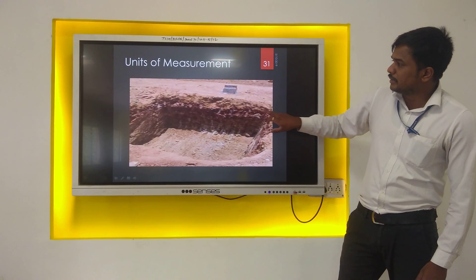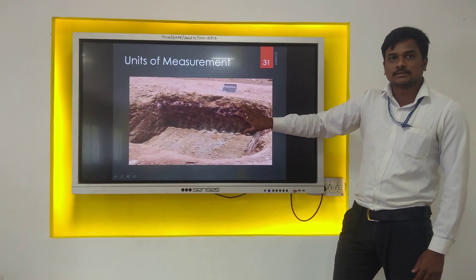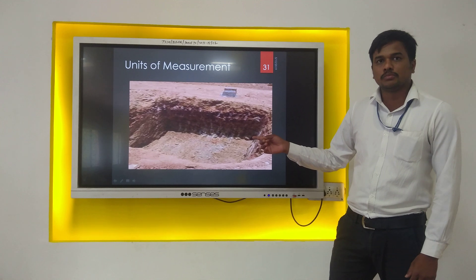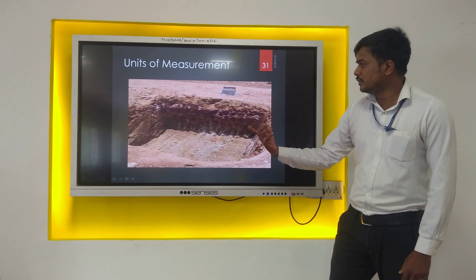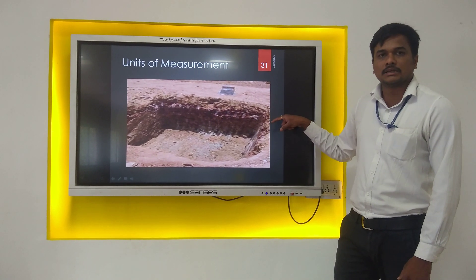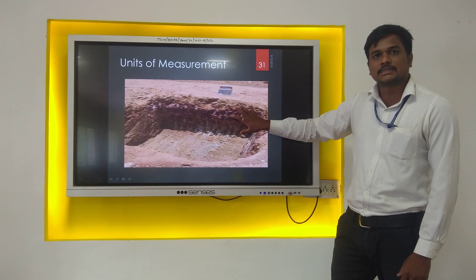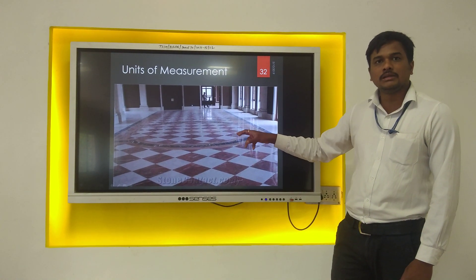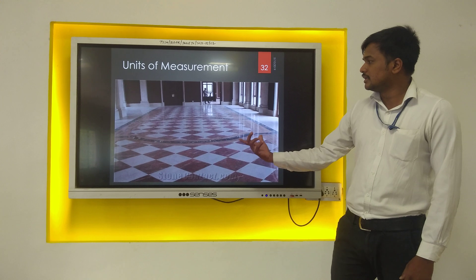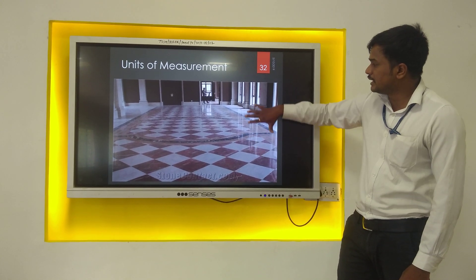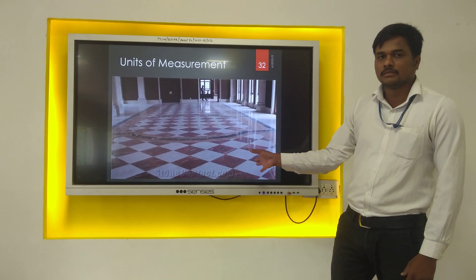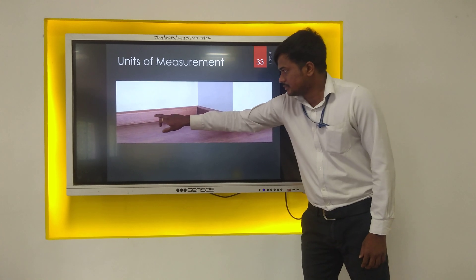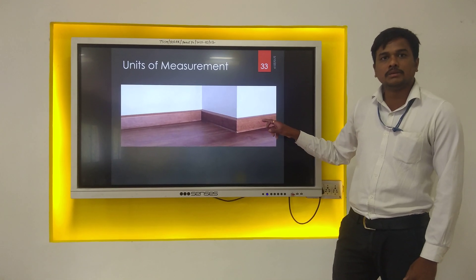Let us see some examples. Excavation is a voluminous work, so the unit of measurement for excavation is cubic meter — you will require length, breadth, and depth of excavation. Second example is flooring — flooring is a thin work, so the unit of measurement for flooring is square meter; you simply require length and breadth. Third example is skirting — for skirting, the unit of measurement is running meter.